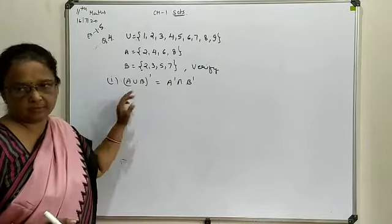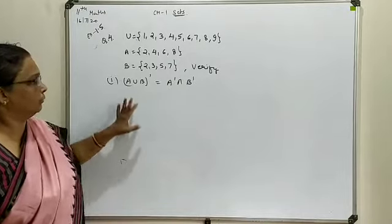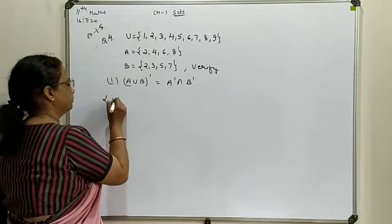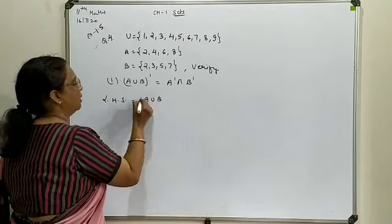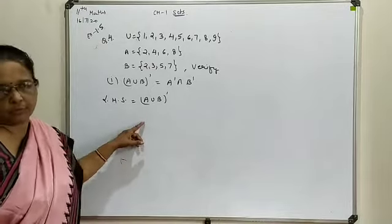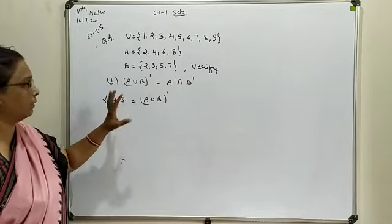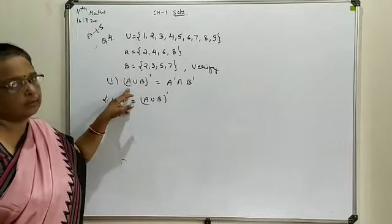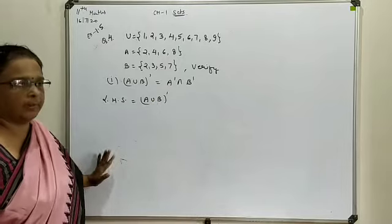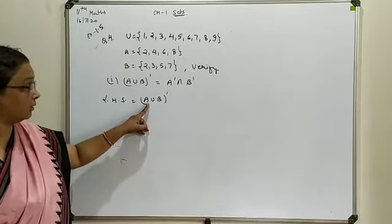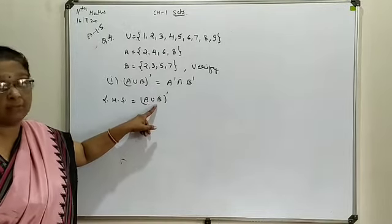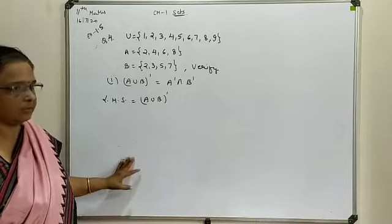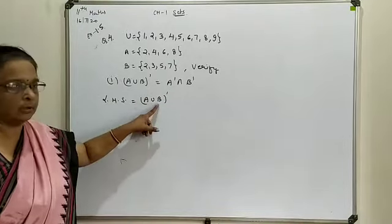The second law involves intersection and union forms. For this part, we start with the left-hand side: (A ∪ B)'. It can be evaluated in two parts. First, find A ∪ B, and then evaluate its complement. So we first find A ∪ B separately. A ∪ B = {2, 4, 6, 8} combined with {2, 3, 5, 7}.